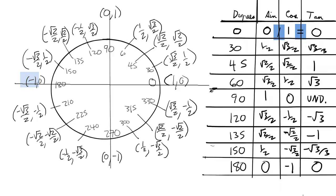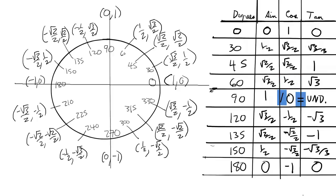Moving on to tangent. Tangent of 0 degrees is 0, tangent of 30 degrees is √3 over 3, tangent of 45 degrees is 1, tangent of 60 degrees is √3, and tangent of 90 degrees is undefined because we can't divide by 0.